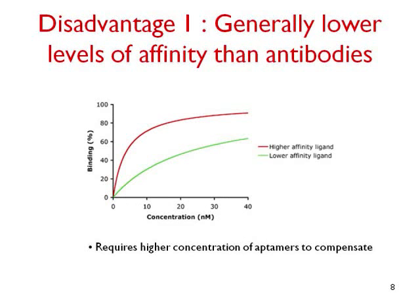Disadvantage 1. In general, antibodies exhibit higher levels of affinity for their targets than do aptamers. I say in general because I am not sure in many cases whether the aptamer selection was performed to our standards, and that the aptamer reported in the literature was necessarily the best aptamer that could be identified for a given target. Our aptamers for mycotoxins bind with similar affinity to their targets as do antibodies for the same targets. Lower binding affinity simply means that more of the aptamer has to be used in order to bind the same amount of target.